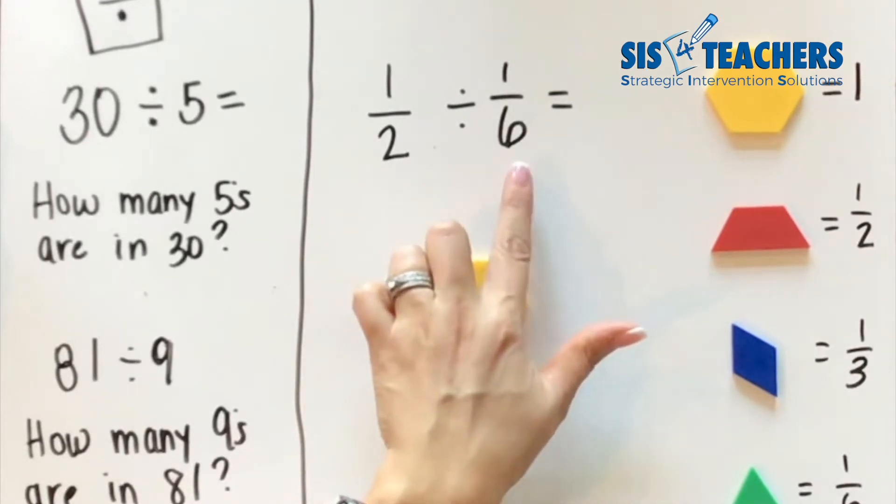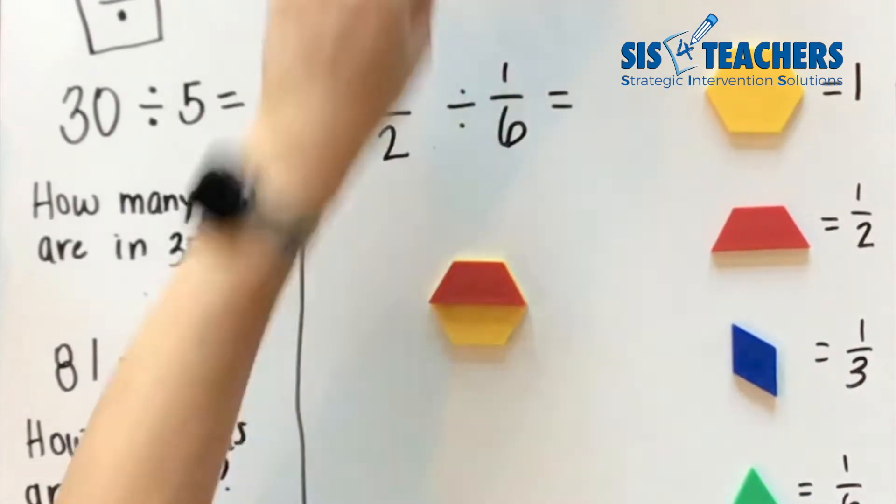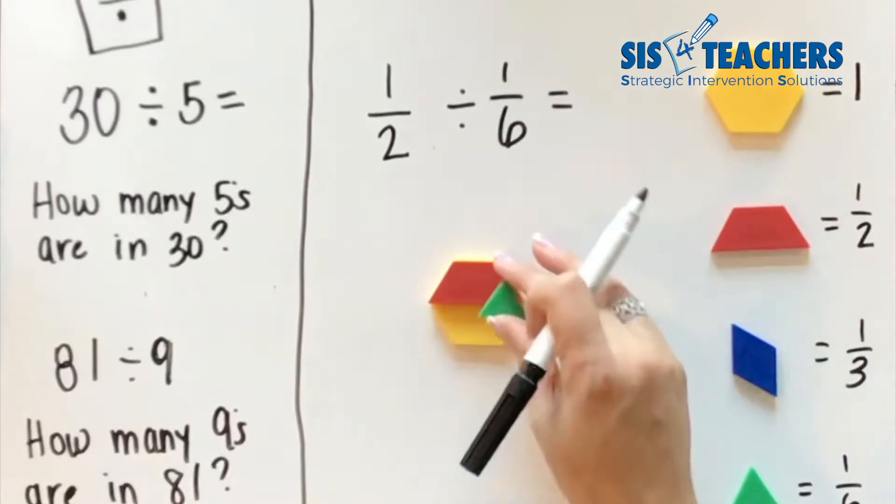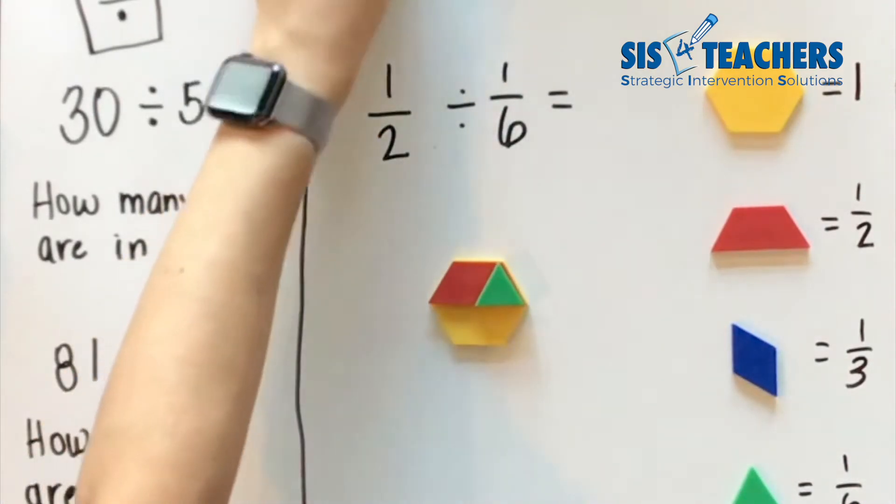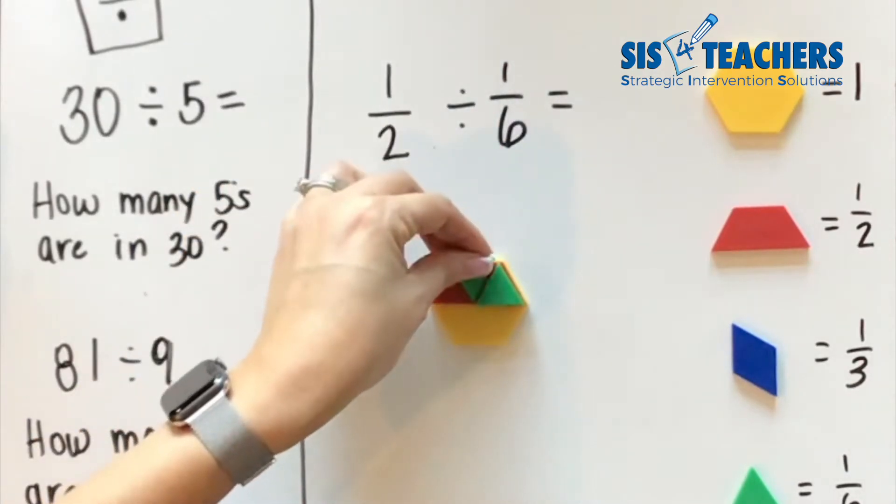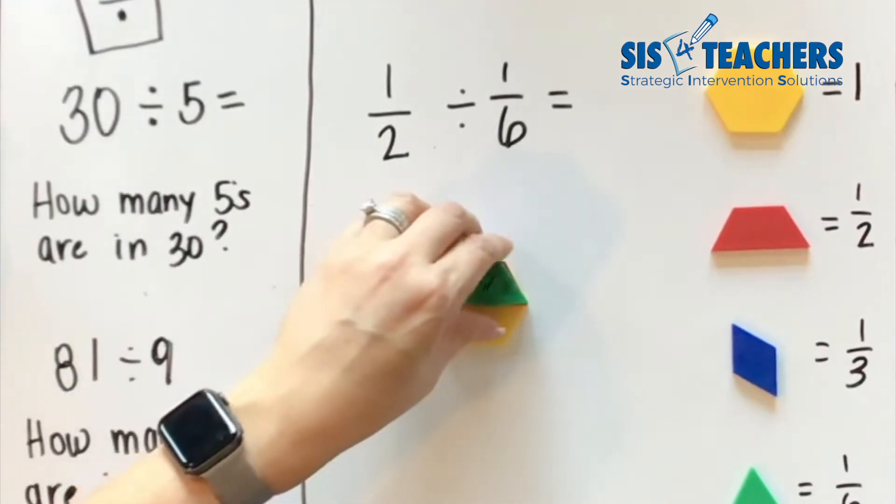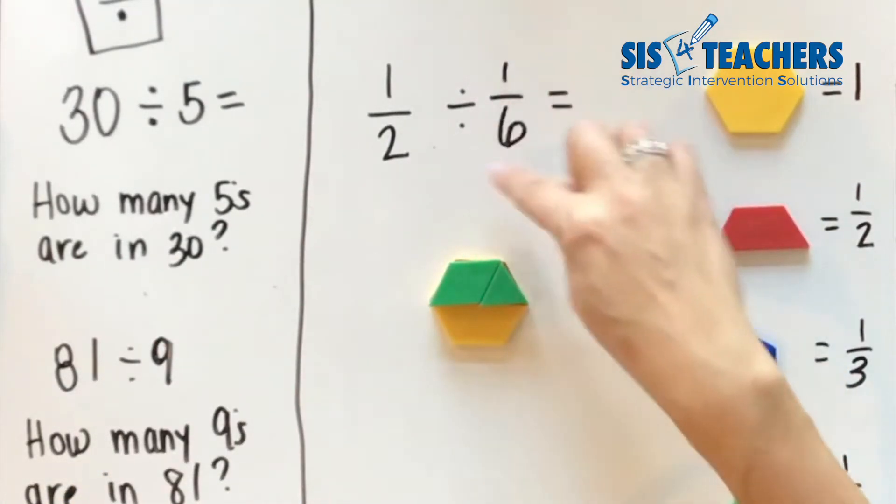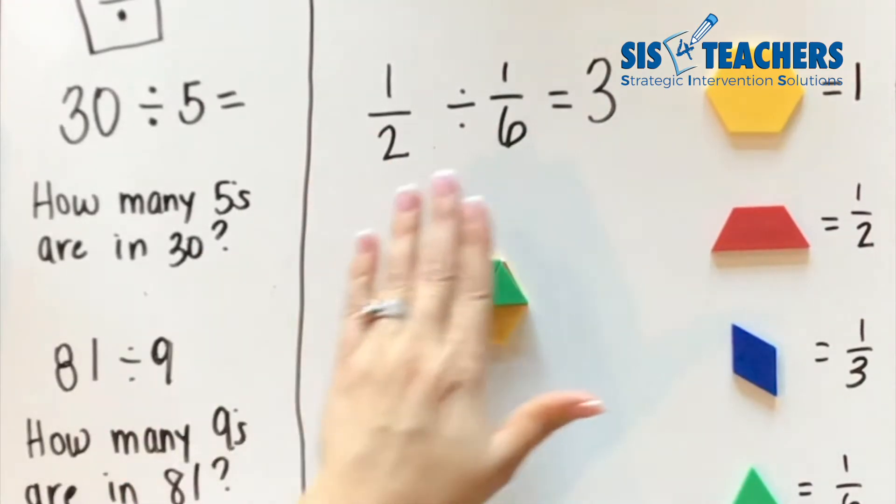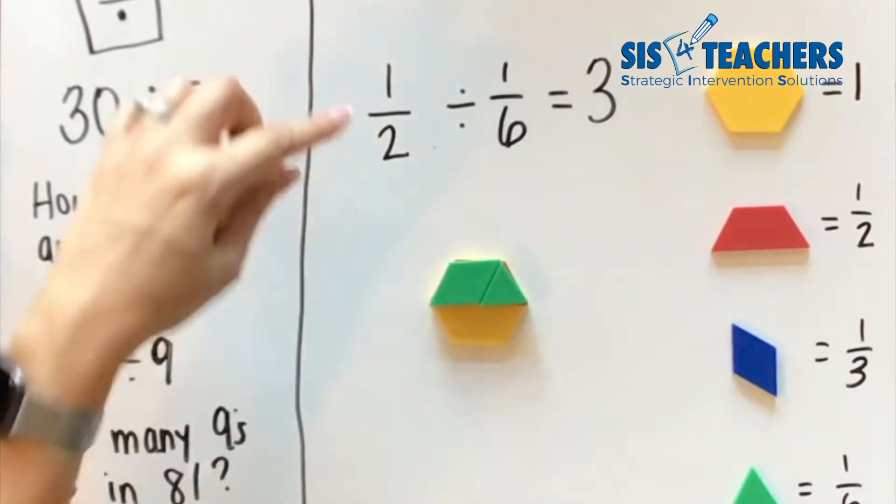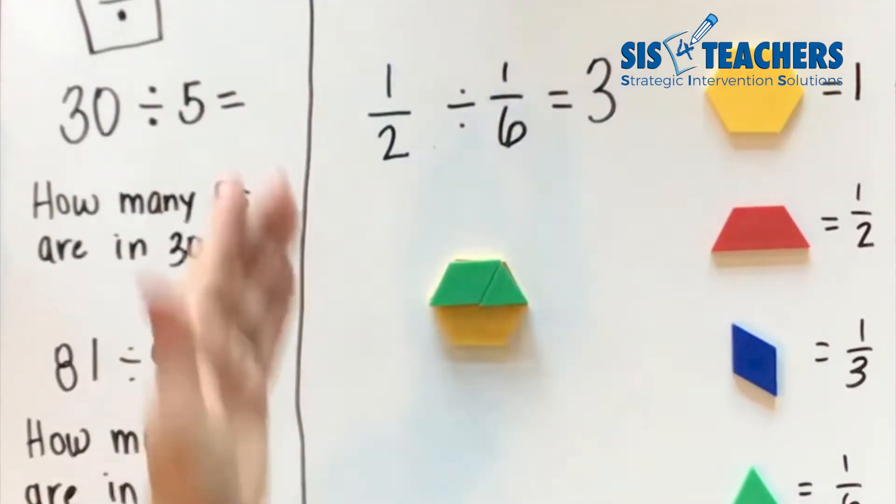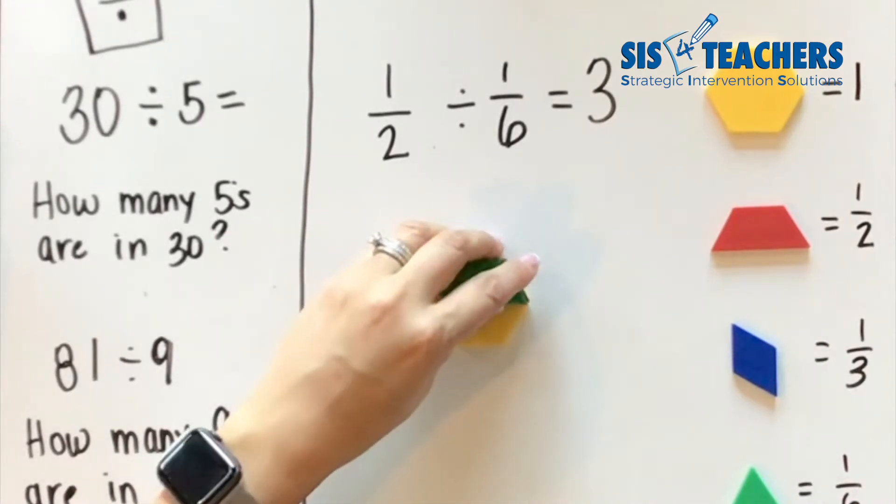I'm going to look at how many sixths are there in half. So I'm going to show my half, and now the question is asking how many sixths. This here is my sixth. If I started to look at how many of those fit, I know that one fits, two fits, three fits. So when I look at my half, I know that three sixths fit inside. I didn't need to flip anything or multiply to do this because I'm able to demonstrate it. We want students first to understand how to do it with division before we learn any shortcuts.